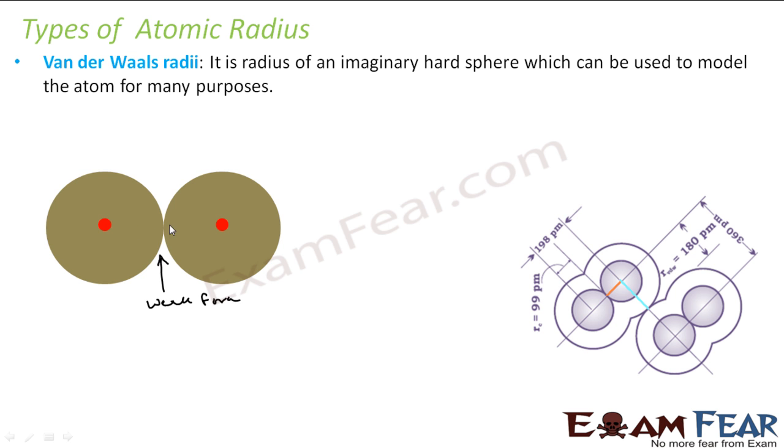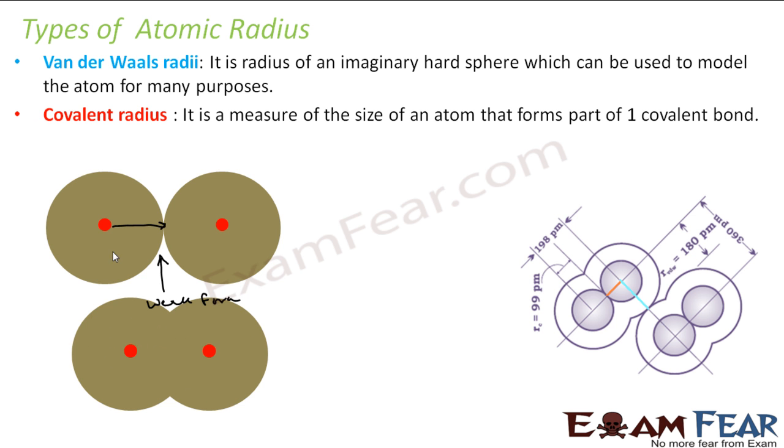But in this case, if you see, there is no bond as such, just a weak force of attraction between them. The next is the covalent radius. In this case, they are a little more closer together because there is a bond here. These two nuclei come together and this distance is my covalent radius. For the same atom, you can find the Van der Waals radius and the covalent radius, and these radii will differ.